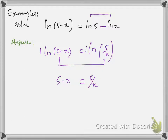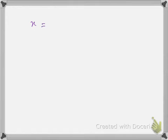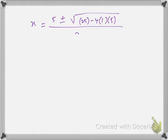So by solving this we have x² minus 5x plus 5 = 0. We need to use the quadratic formula as we won't be able to factorize this. By using the quadratic formula we have x = (5 ± √(25 − 4×1×5)) / (2×1). Hence the solutions are x = 3.62 and x = 1.38.